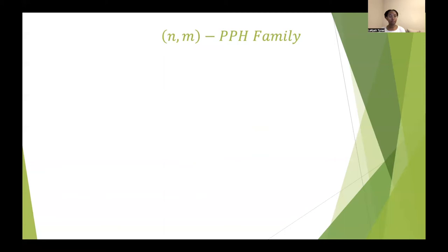Now, an n,m property-preserving hash family, for some predicate p, consists of a family of hash functions h and the following algorithms. We have samp, which samples one hash function from that hash family.